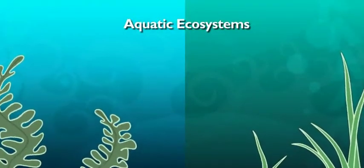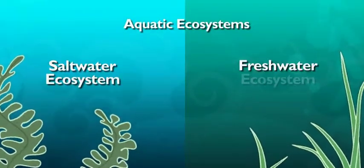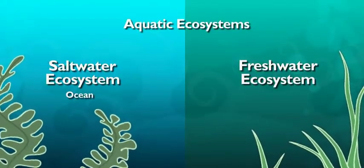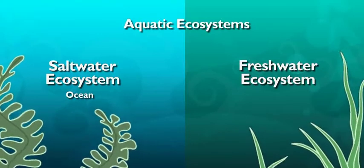There are two different kinds of aquatic systems, saltwater and freshwater. Saltwater fish live in the ocean. The ocean is a saltwater ecosystem. This tank is a freshwater ecosystem.